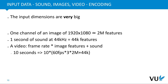A major problem here is that the input dimensions are very large. Looking at just one channel of an image, we could already have two million features. With three channels, that becomes six million. Similarly, one second of audio sampled at 44 kilohertz leads to 44,000 features. For a video, you multiply the frame rate by the number of image features and add the audio — so even 10 seconds of video results in an extremely large number of features.